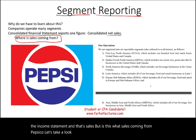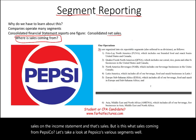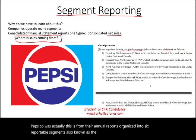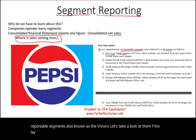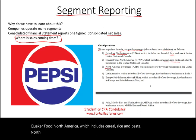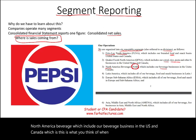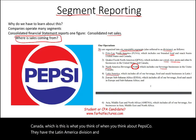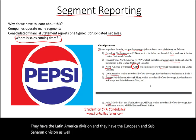Let's take a look at PepsiCo's various segments. According to their annual reports, PepsiCo is organized into six reportable segments, also known as divisions: Frito-Lay North America, which includes branded food and snack businesses; Quaker Food North America, which includes cereal, rice, and pasta; North America Beverage, which includes their beverage business in the US and Canada; Latin America; Europe and Sub-Saharan Africa; and Asia, Middle East and North Africa.